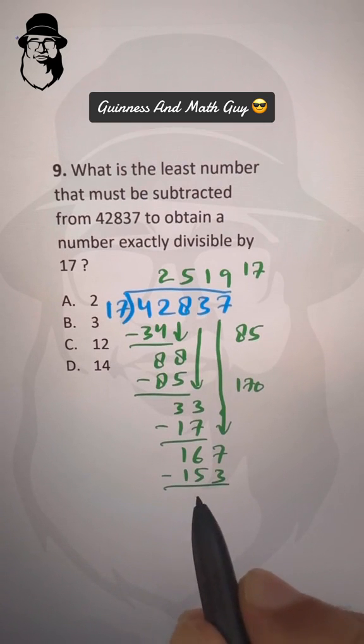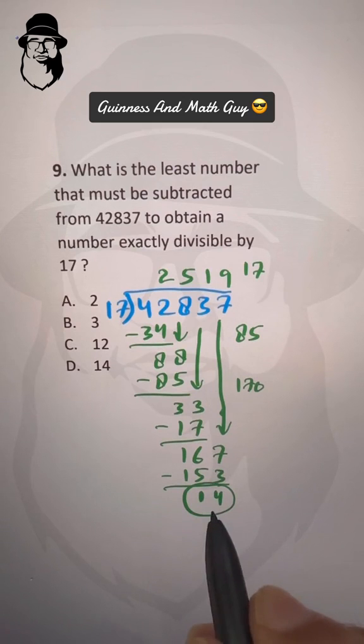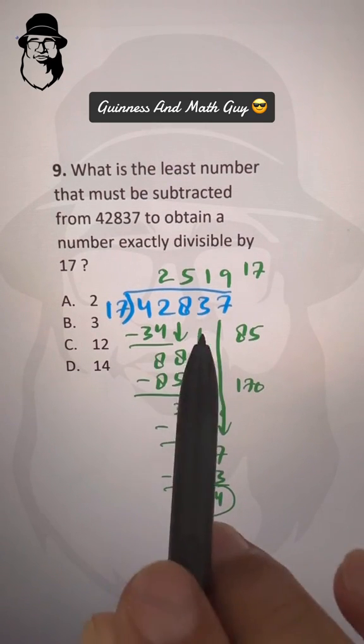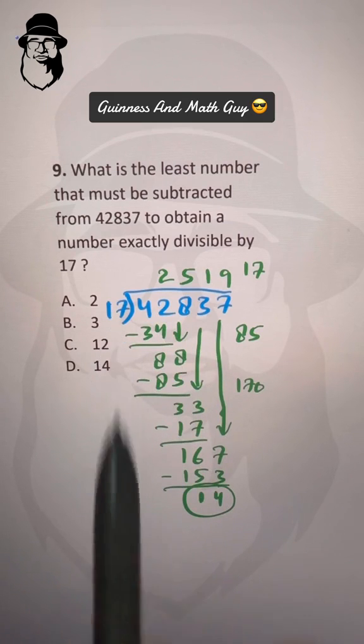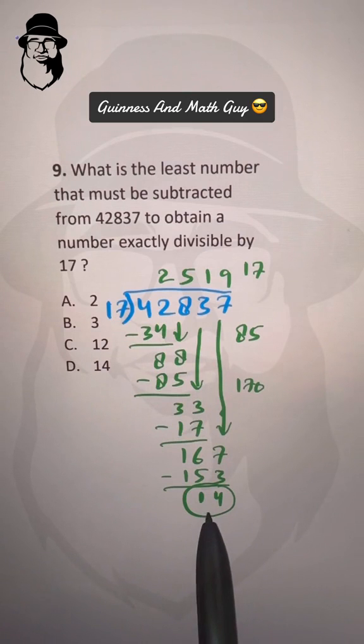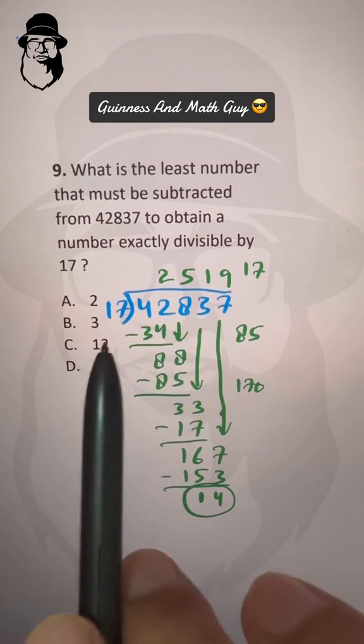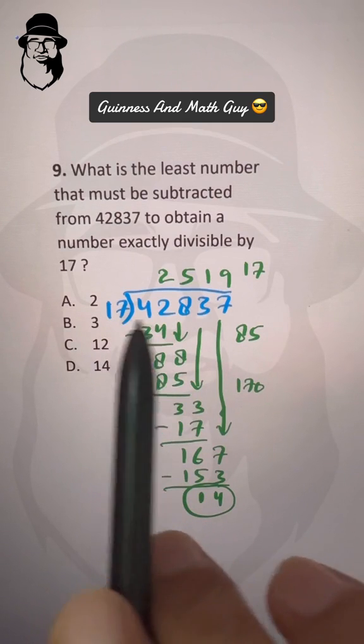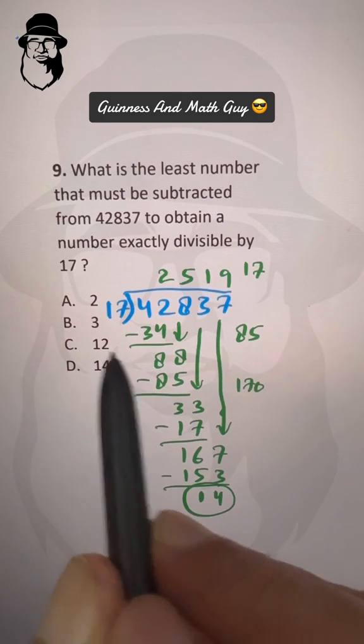Now this remainder means extra. So if we just subtract this 14 from this number, this will become a perfect multiple of 17. So this is the extra number, the smallest number that we have to subtract from this number to make it a multiple of 17, or it will come in the 17 times table. So that's our answer, choice D.